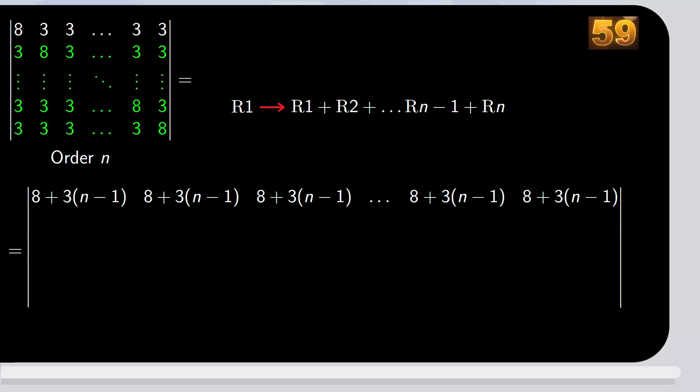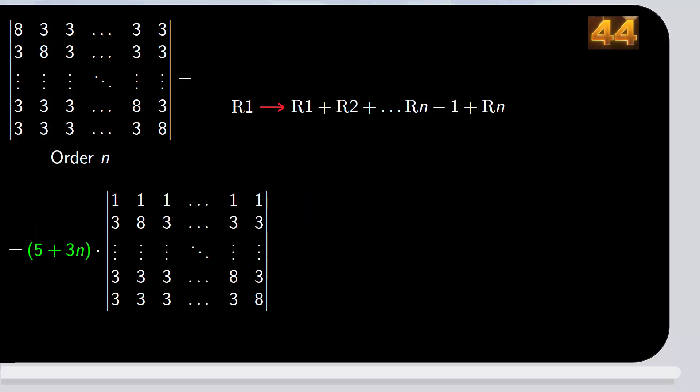So, we copy the rest of the rows. Now we take out the 8 plus 3(n-1), which is 5 plus 3n, so that in the first row all the elements are 1. We copy the rest of the rows, and there we have it.